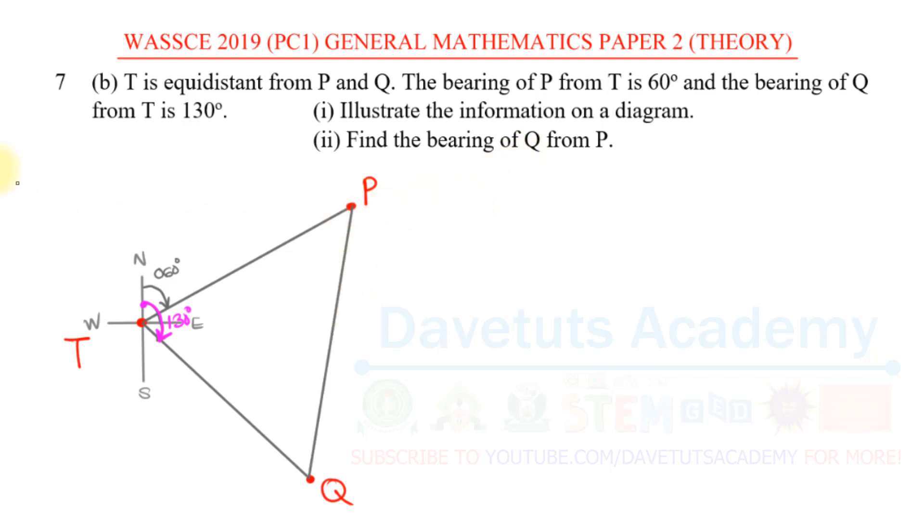And to find the bearing of Q from P, it means that at P we also take our four cardinal points: the north, the south, the east, and the west, and we find this bearing. That means that will be this particular angle from the north here down to this line that is inclining P and Q together. So that's what we're looking for, and that is the bearing of Q from P.